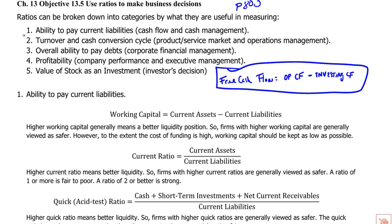Here are the categories that the ratios can be broken down into. First, the ability to pay current liabilities — really, taking care of operations in the short run. If that ratio is bad, it would indicate that the firm is in very near-term distress. We're also looking at turnover ratios, and in particular the cash conversion cycle — when a company invests in inventory and has sales on credit, they have to wait for the cash to come in, and that's where their working capital need comes from.